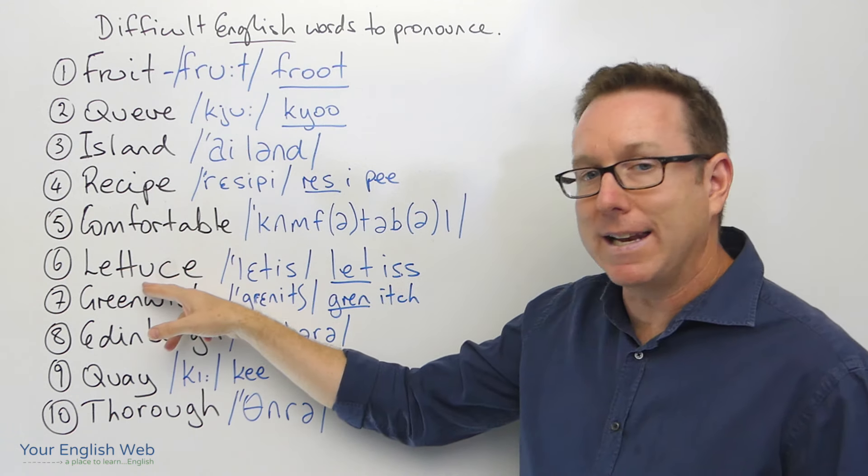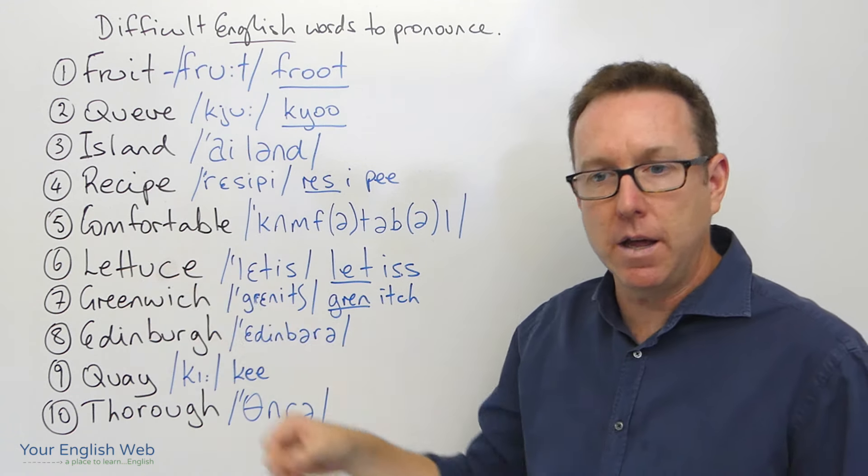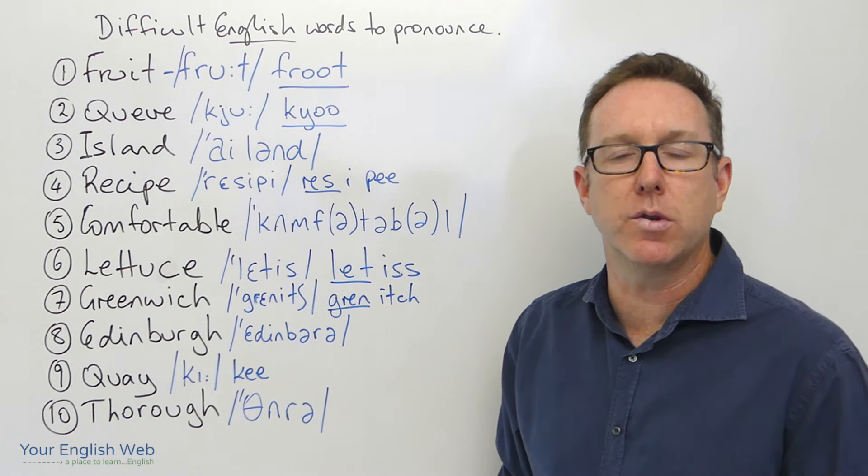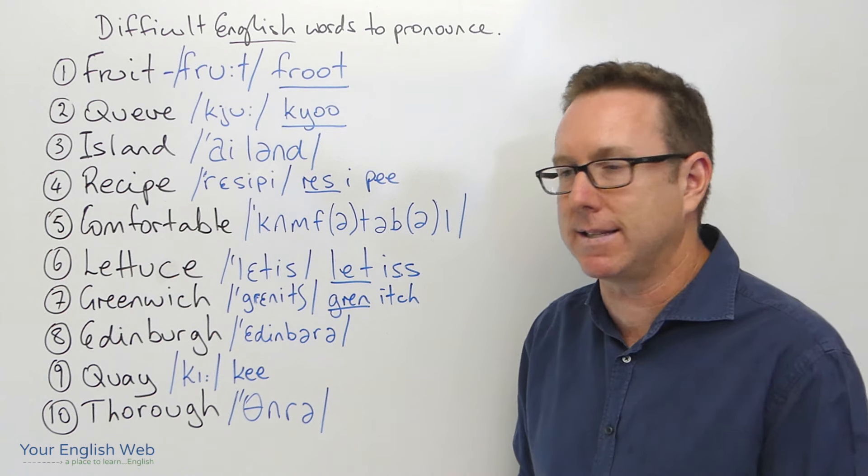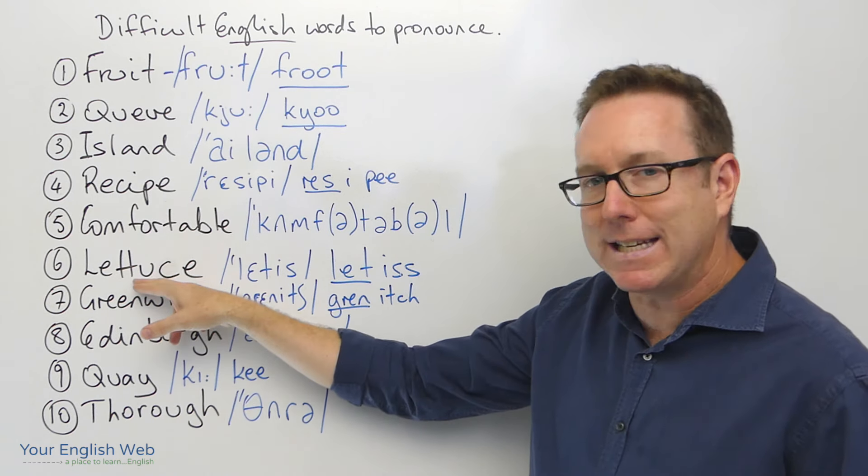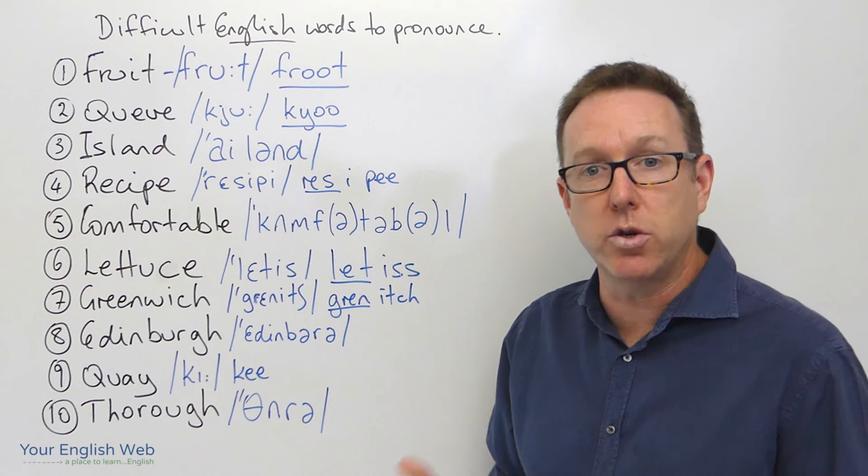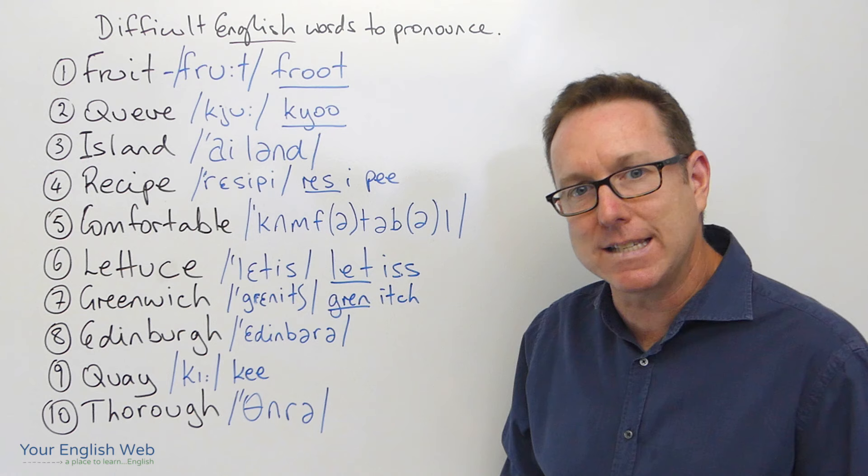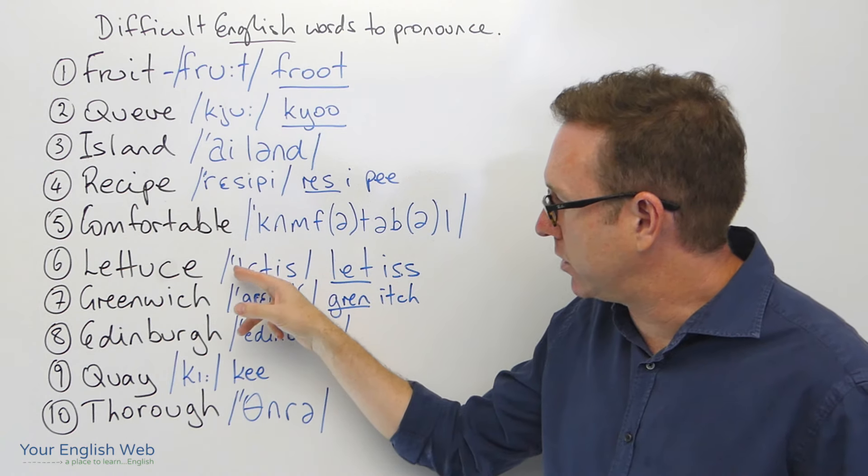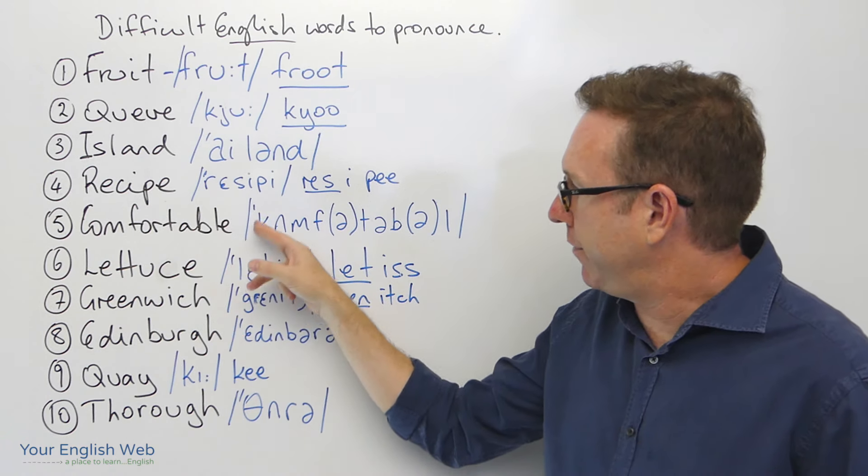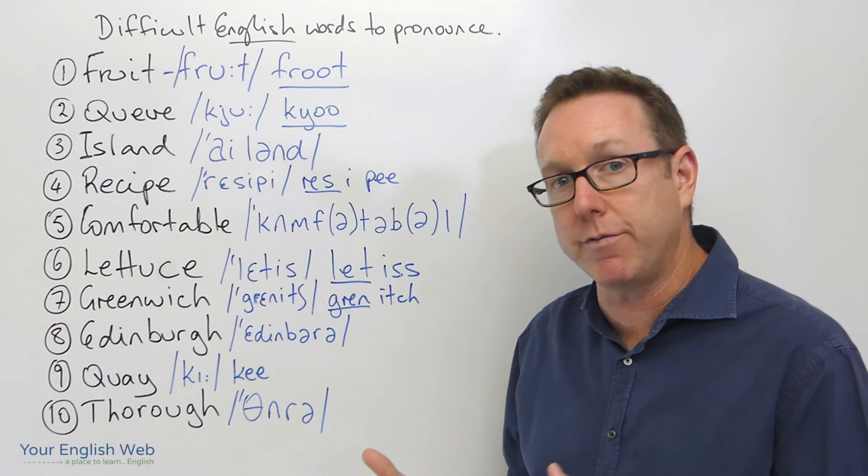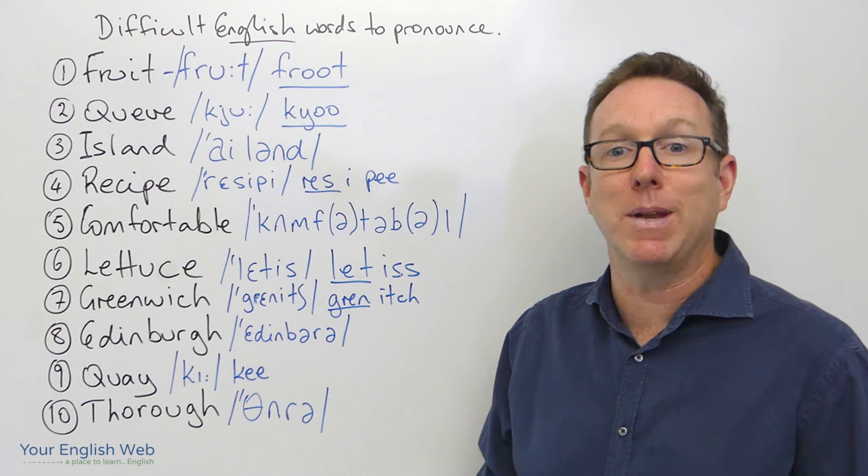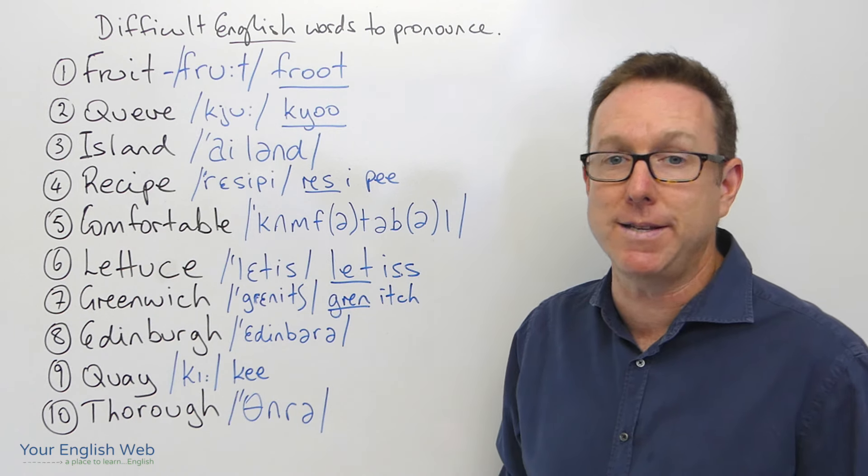The next one is lettuce, lettuce, that green leafy substance that you put into your sandwiches or your salads. Lettuce, it's not lettuce, it's lettuce, lettuce. We can see here again, lettuce with the stress at the beginning. If you see this symbol here, it means the stress is at the beginning of the word. Lettuce, lettuce, lettuce. I'd like some lettuce in my sandwich, please.